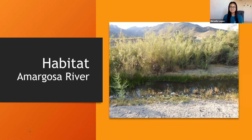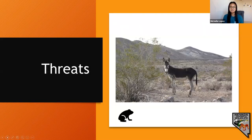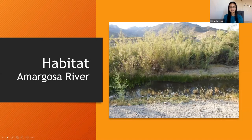Toadlets and adult toads prefer areas with clean flowing or ponded water and may be more dependent seasonally on open water habitats than other species in the same family. Adult toads use vegetative and woody structure, rocks, and rodent burrows as daytime resting and escape areas in uplands. They're not fans of cold and windy weather and will hide in burrows until conditions improve.